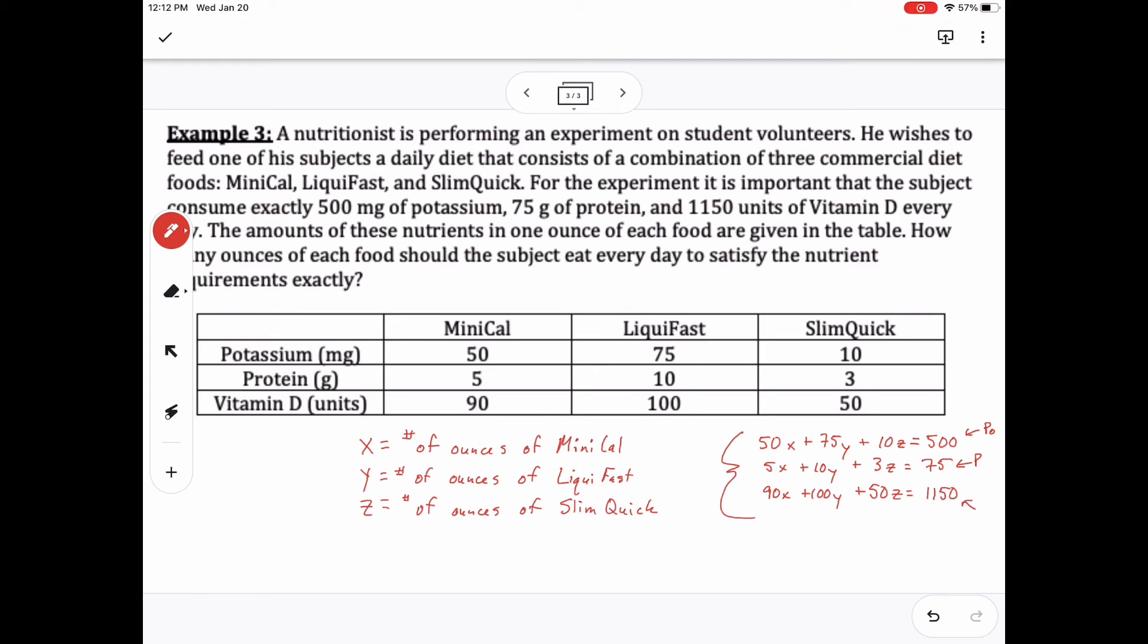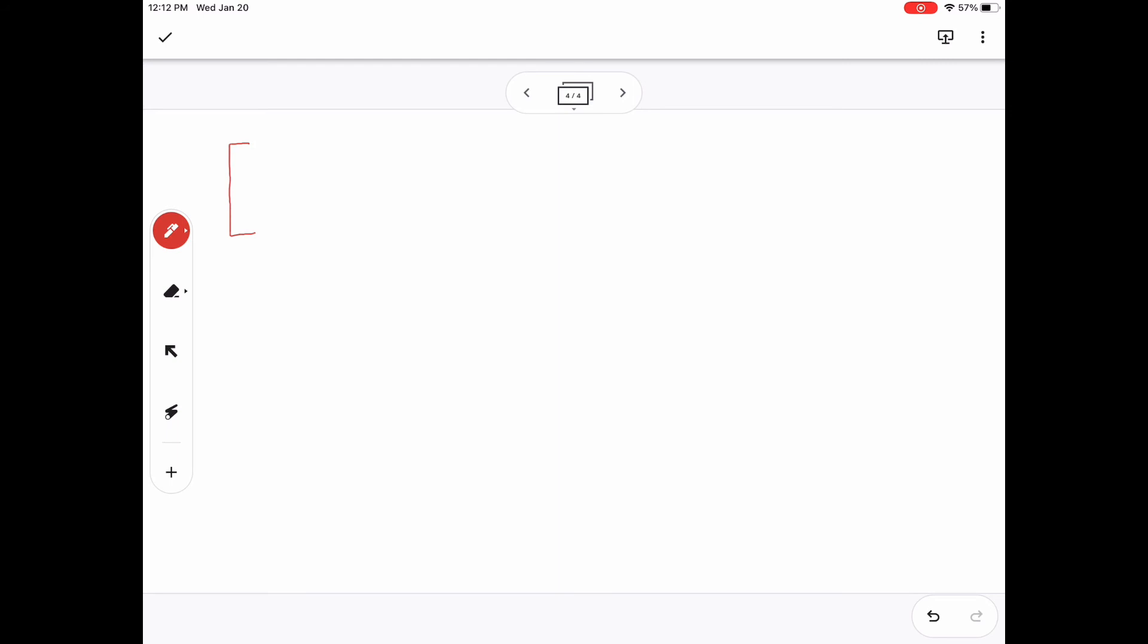Since there's not enough space on this screen, I'm going to go to the next slide to kind of write this equation using our augmented matrices. So in that first row, I want that to be a 1 in the first column. So I'm going to multiply that row by 1 over 50.